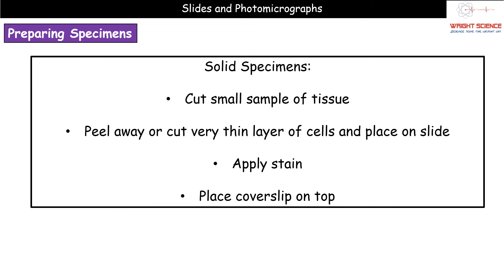For a solid specimen — think your onion slide preparations from key stage three — cut a small sample of tissue, then peel away or cut a really thin layer of cells and place that onto the slide. Add a couple of drops of stain, place the cover slip on top, and again gently press it down to remove any air bubbles, then view it on the light microscope.